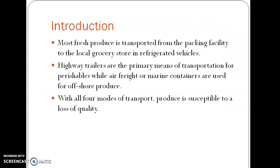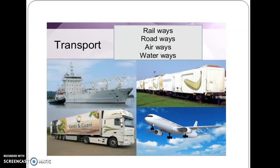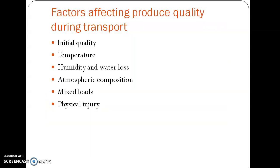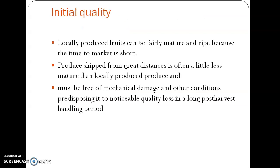Although we use all four modes of transportation, there is always some loss of quality of the produce during transportation. The factors affecting quality during transportation include the initial quality of the produce, temperature during transportation, humidity and water loss, atmospheric composition inside the trailer, mixed loads, and physical injury.